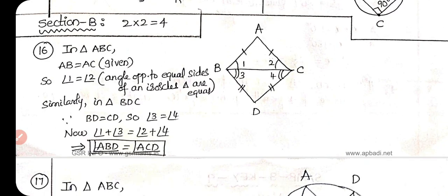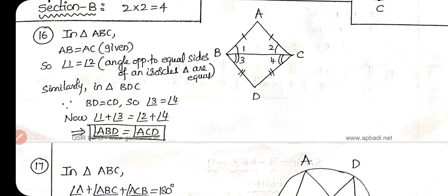Question 16: In triangle ABC, AB = AC (given), so angle 1 = angle 2 — opposite angles of an isosceles triangle are equal. In triangle BDC, BD = CD, so angle 3 = angle 4. Therefore, angle 1 + angle 3 = angle 2 + angle 4, which means angle ABD = angle ACD.